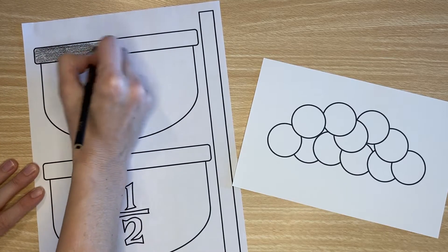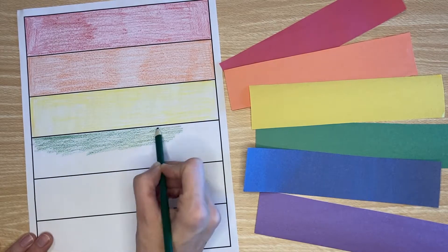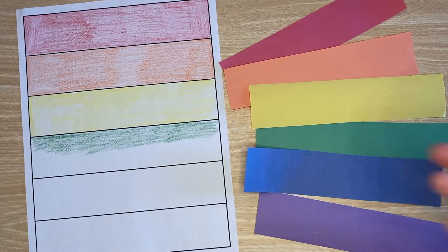First they color and cut out the templates included with this download. Then they color the rainbow strips or you can use colored construction paper.